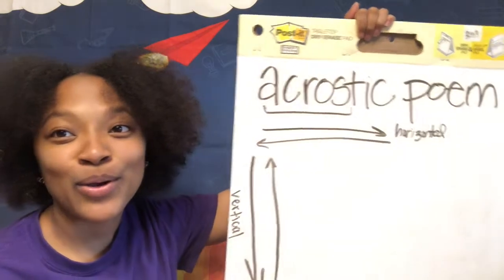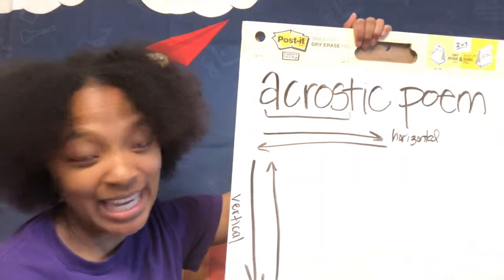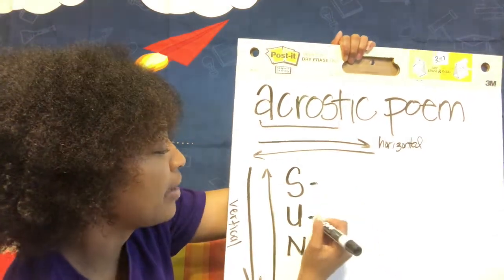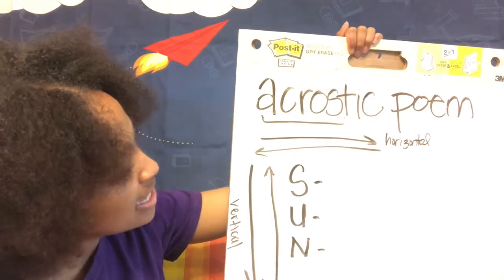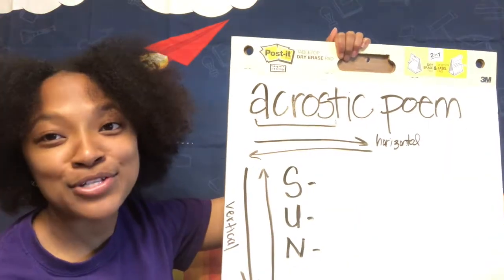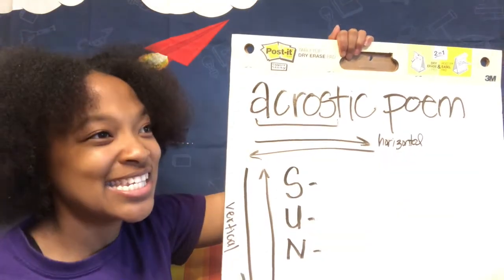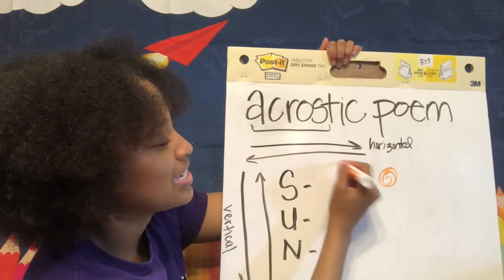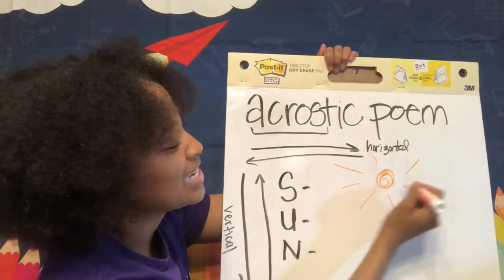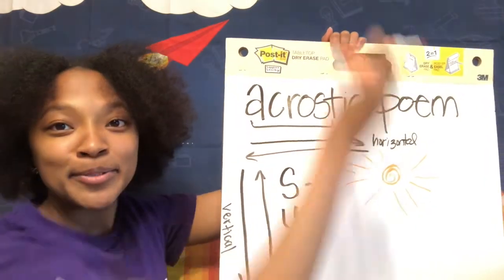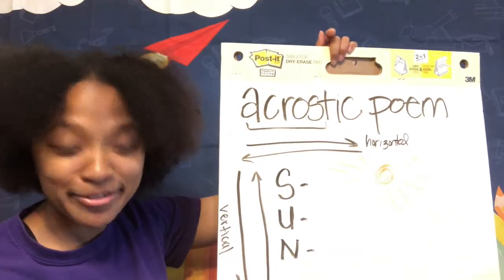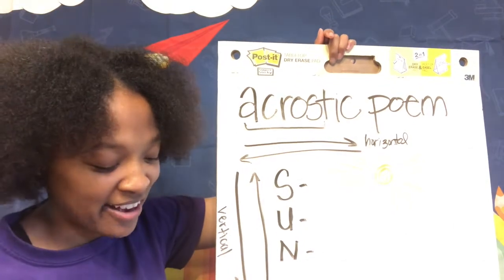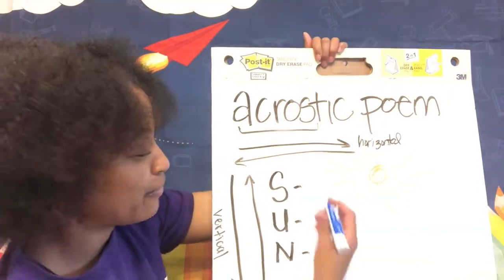So if I wanted to do an acrostic poem of the word 'sunny' or 'sun,' we'll just do sun. I write the word vertically just like this. So I have the word sun, just like sunshine. And what we need to do now is think of a word or phrase related to sun that starts with each of these letters. Let's think — when we think about the sun, what types of words or phrases come to mind? How about summer? Summer starts with the letter S, so let's put summer for our first word.